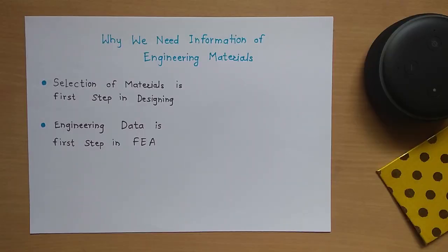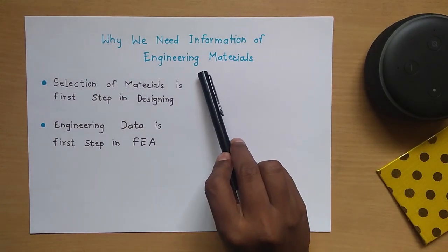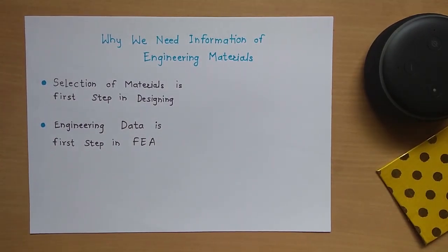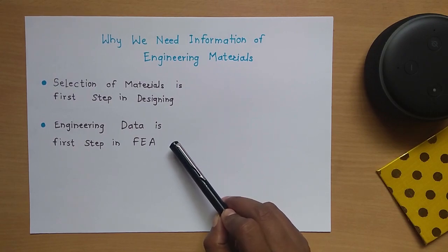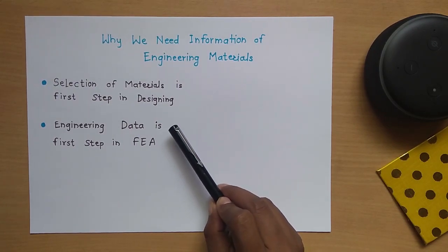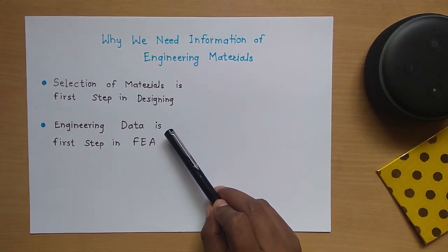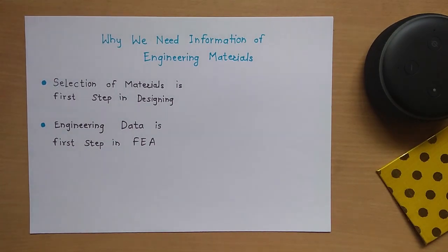First of all, we will see why we need information of engineering materials. Basically, there are two important steps which need to be carried out first. Selection of a material is the first step in designing. While designing any product or any part, we have to select the material first, like designing a shaft — we need to select the material first.